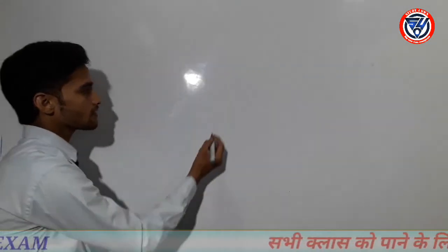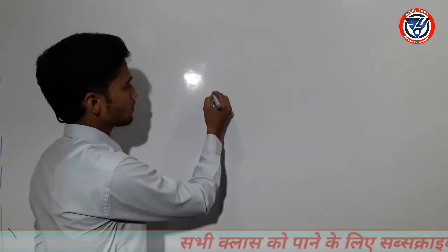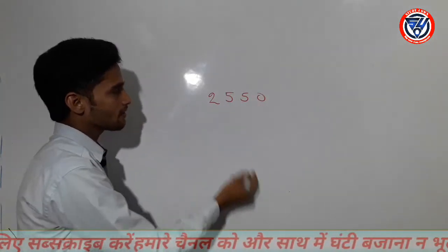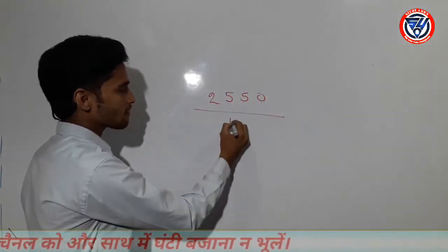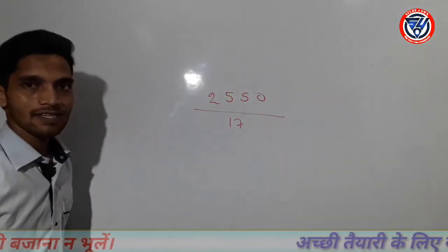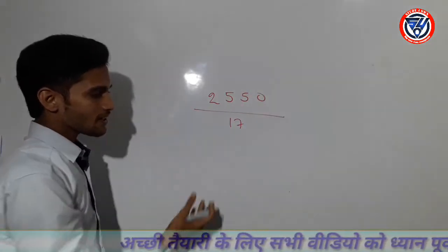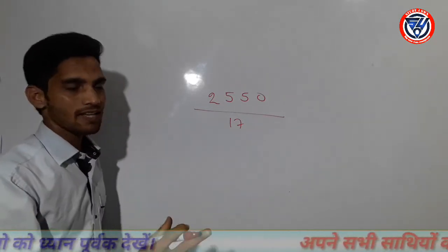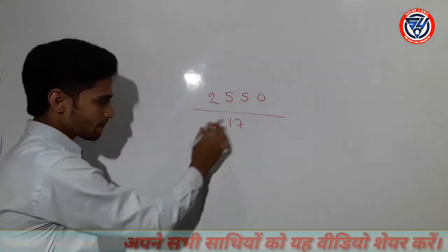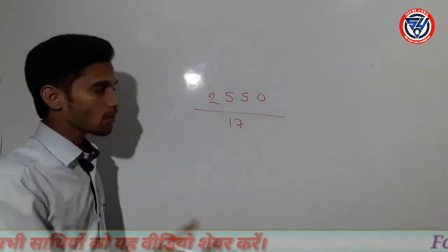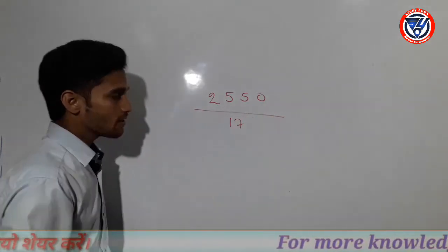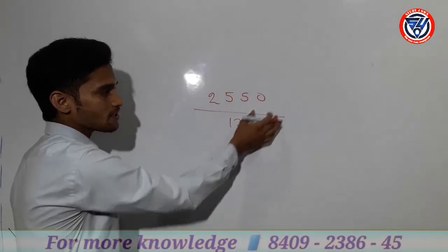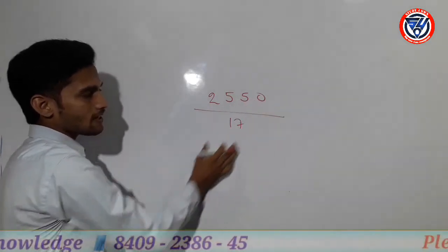Chaliye doston. Toh koi bhi number lete hain. 2, 5, 5, 0 — yaane 2550. Kisse divide karenge? Ek aisi number jis ka pahada aapko pata na ho — jaise 17, 87, 19, 23 — so you can't remember all the numbers. Okay? There are so many numbers. Then how much do we divide? 2500 divided by how much? 17.